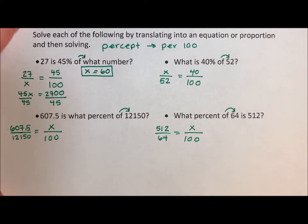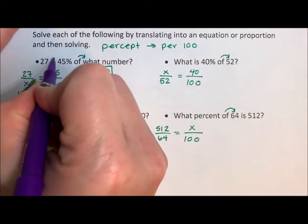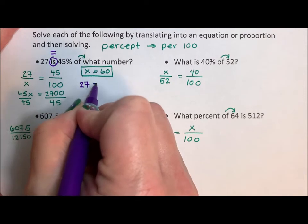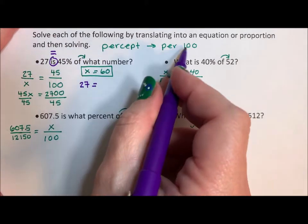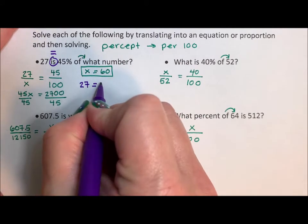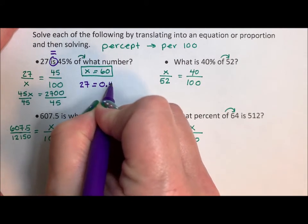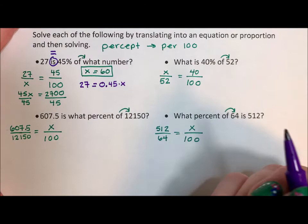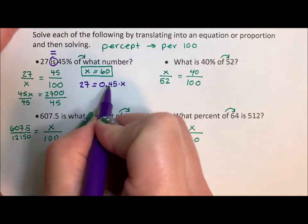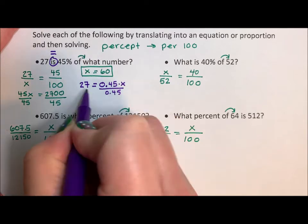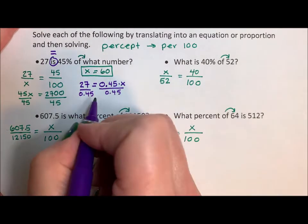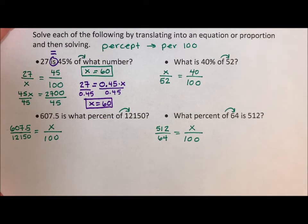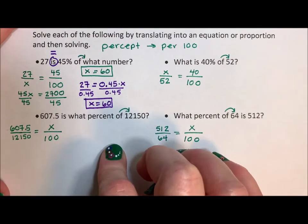If I were to translate this, the word is is my equal sign. So 27 is, now I'm going to turn 45 per 100, 45 into a decimal, is 0.45 of, always means multiplication, what number? So 27 equals 0.45 times X. I divide by 0.45 and 27 divided by 0.45 is 60. A lot of times people like translating. You actually have to read and kind of translate it, but it's a lot faster.